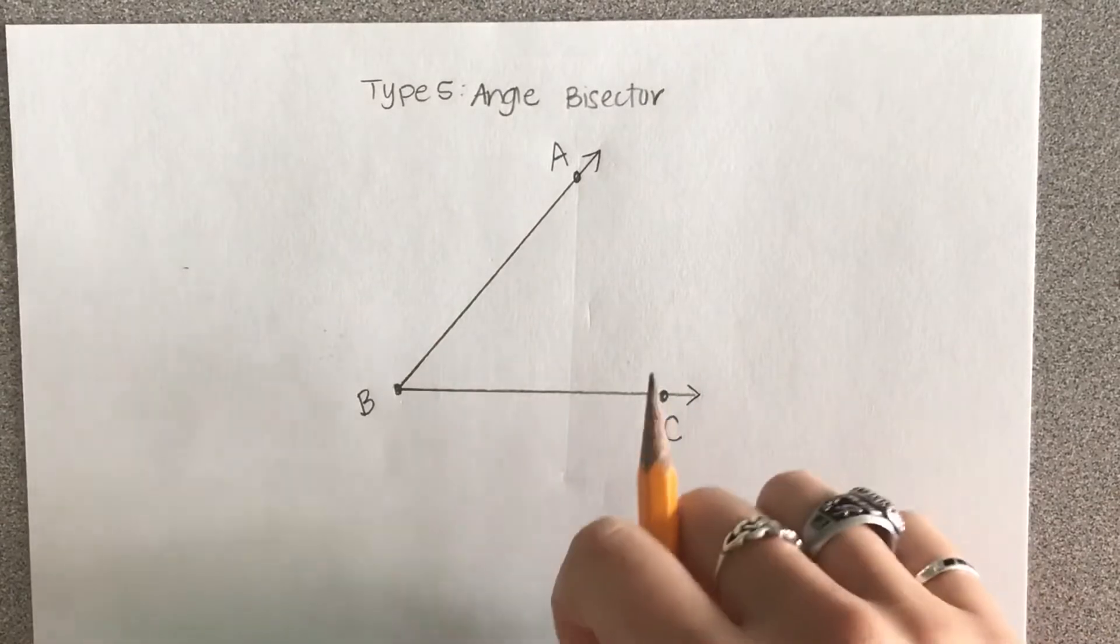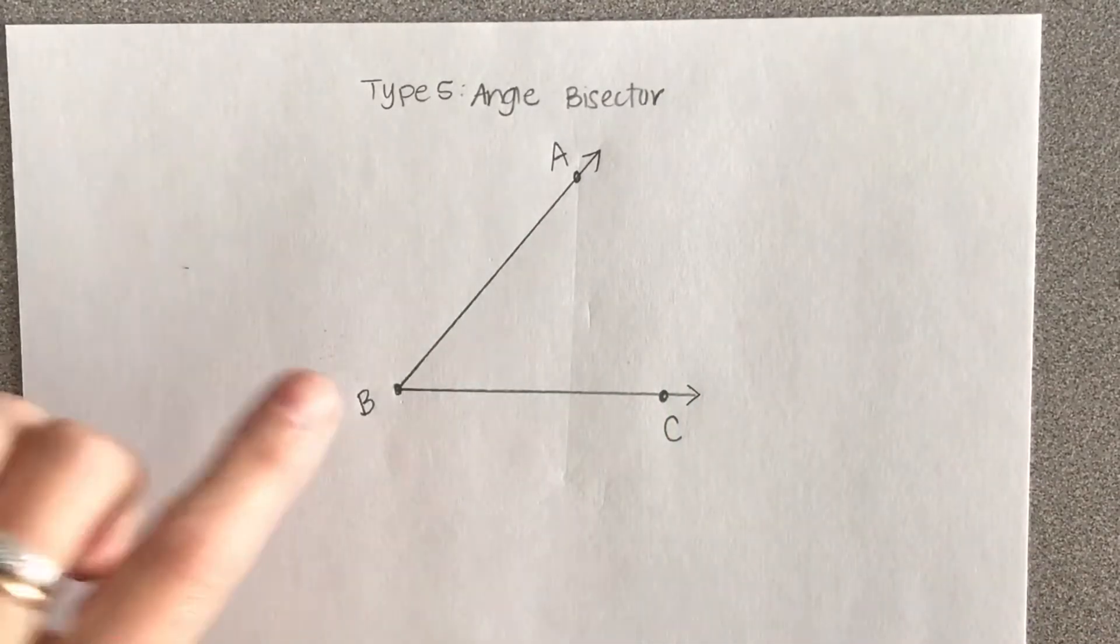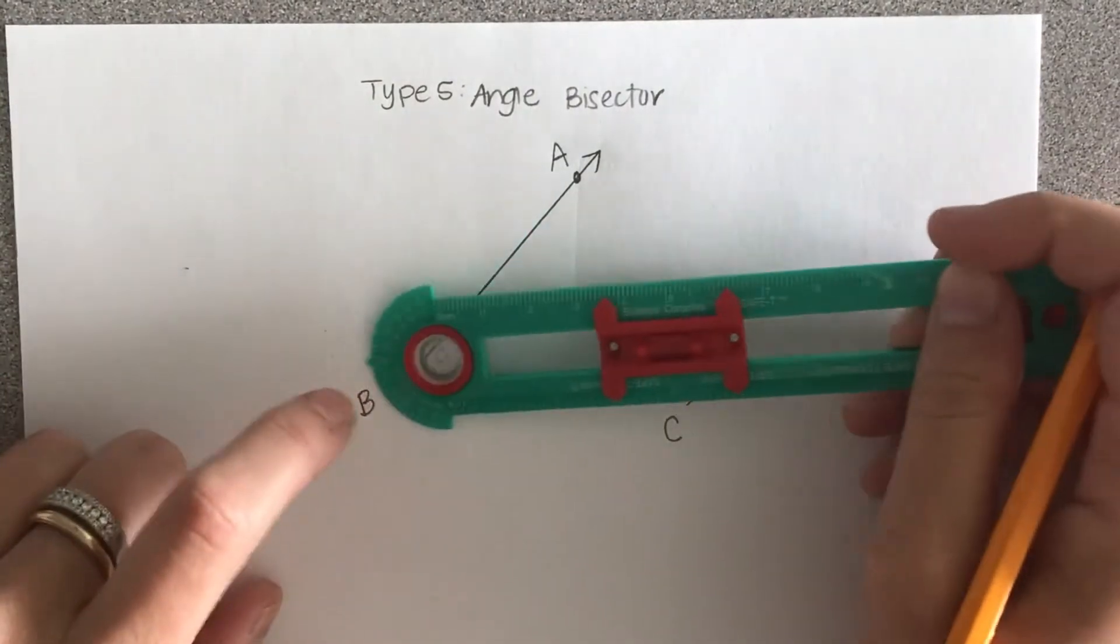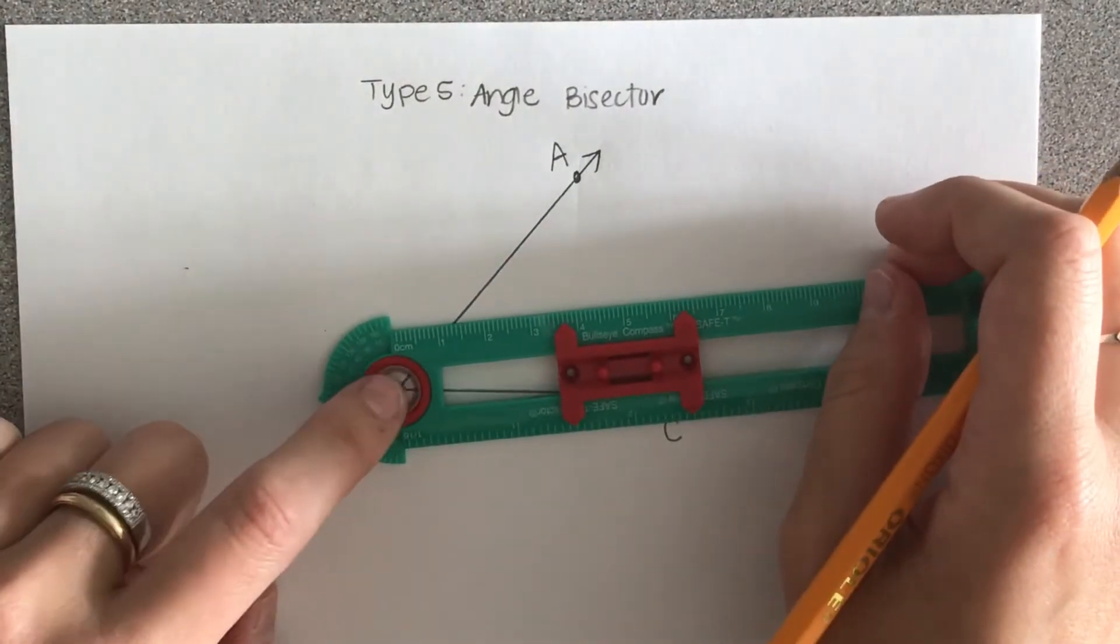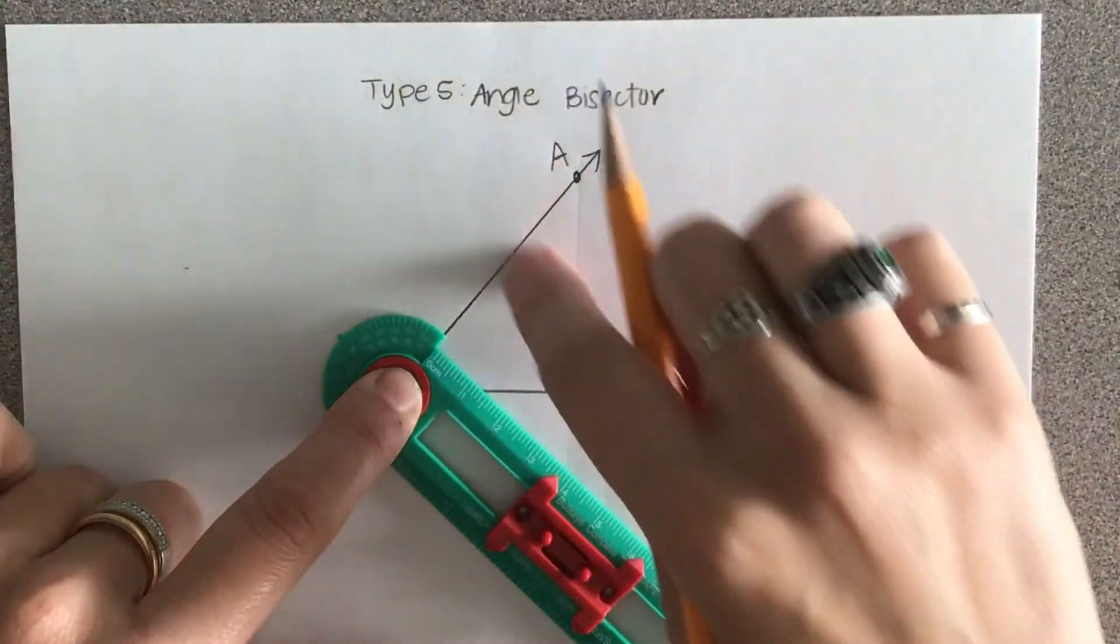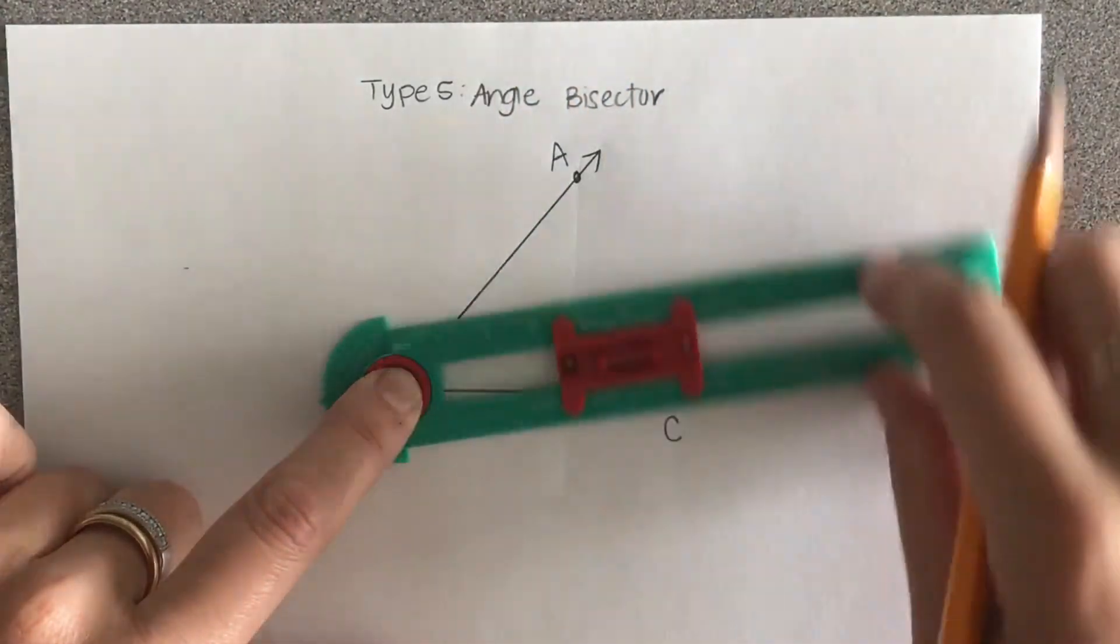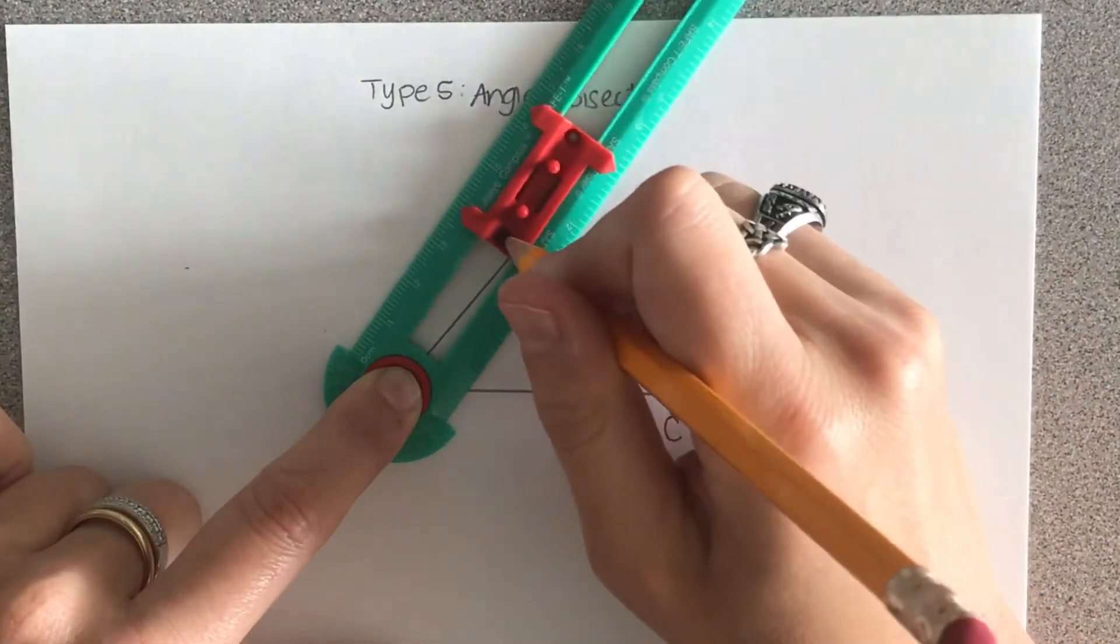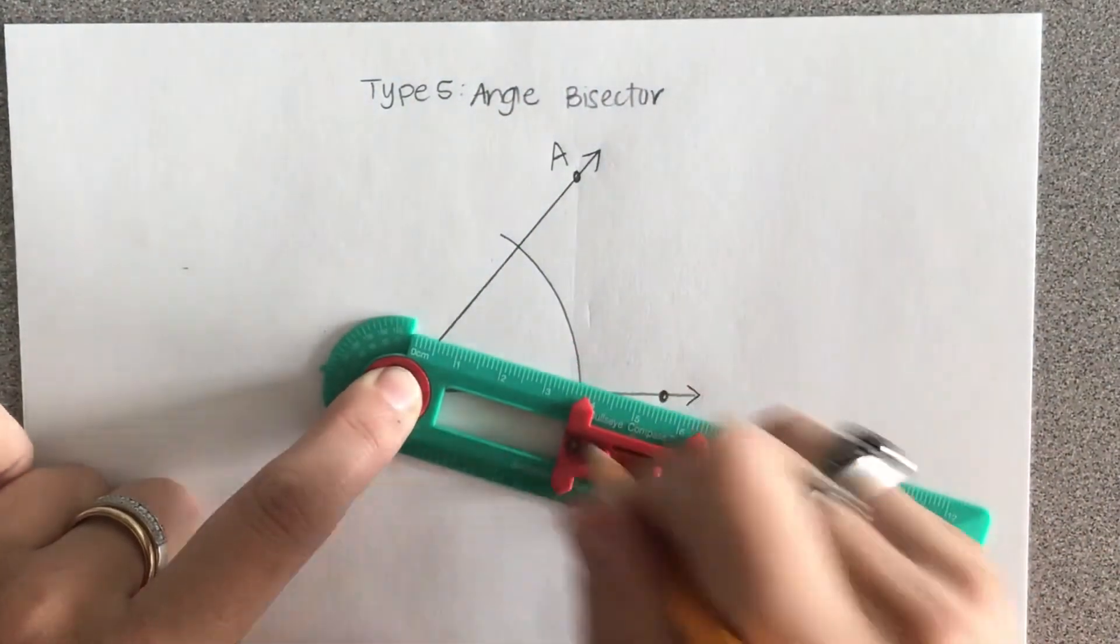The first thing I'm going to do is take my compass and put it on the vertex of the angle, on point B. Then I'm going to draw an arc that intersects both sides of the angle. It doesn't matter where, as long as it intersects both sides.